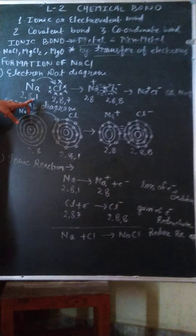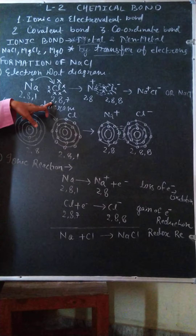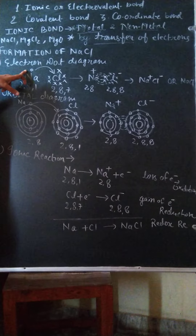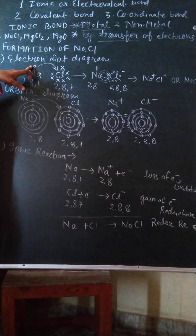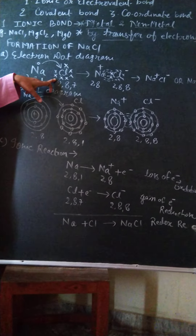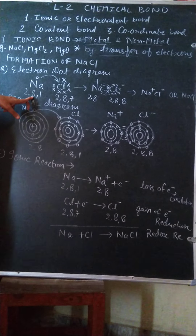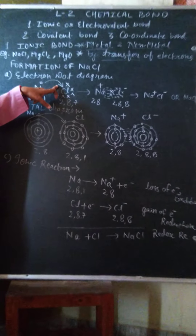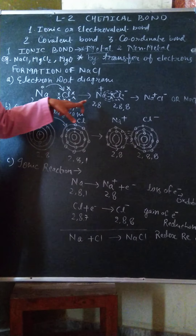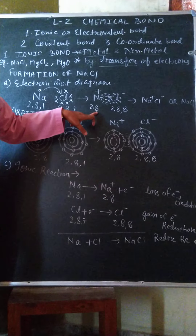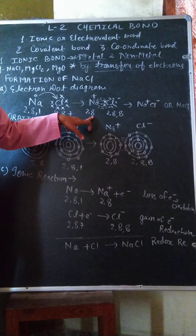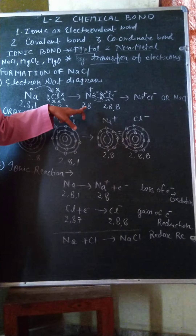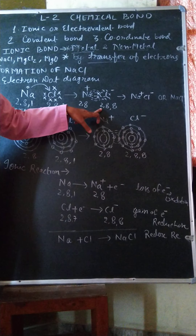The configuration of sodium is 2-8-1 and the configuration of chlorine is 2-8-7. Now, sodium will transfer its one valence electron to chlorine to complete its octet. This arrow shows the transfer of electrons. After the transfer of electrons, sodium will have the 2-8 configuration and becomes Na⁺, because it loses one electron. So Na⁺ and Cl⁻ are formed.